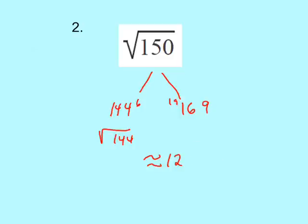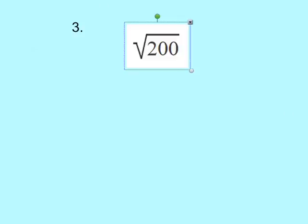Let's look at number 3. We're looking for the square root of 200. Now, from our memorized table, we know that 14 squared is 196 and 15 squared is 225. So that's where 200 falls in between.